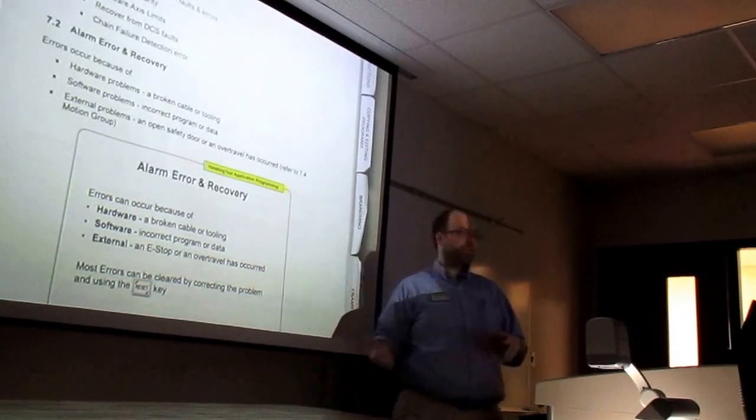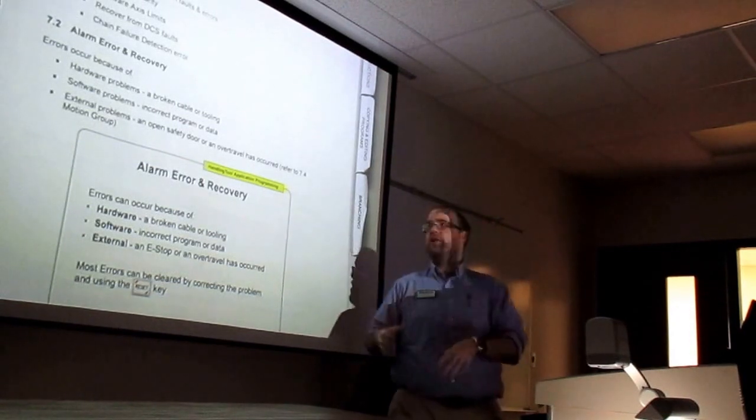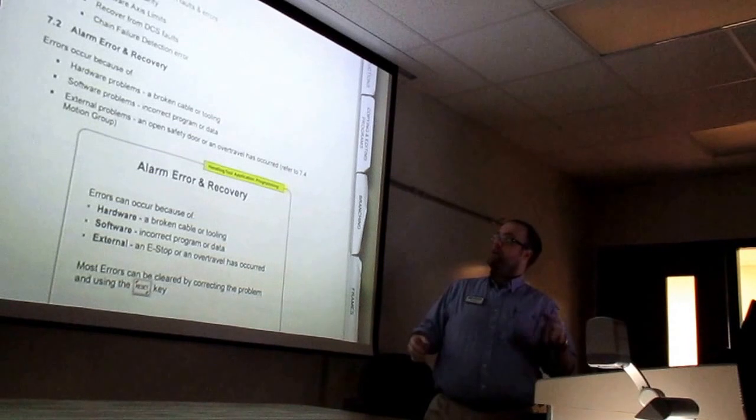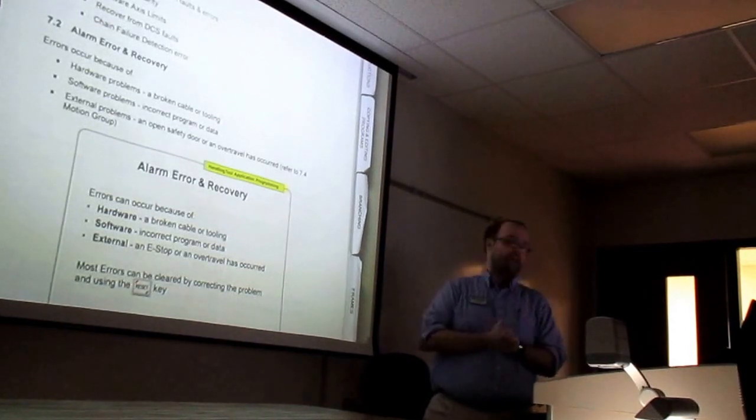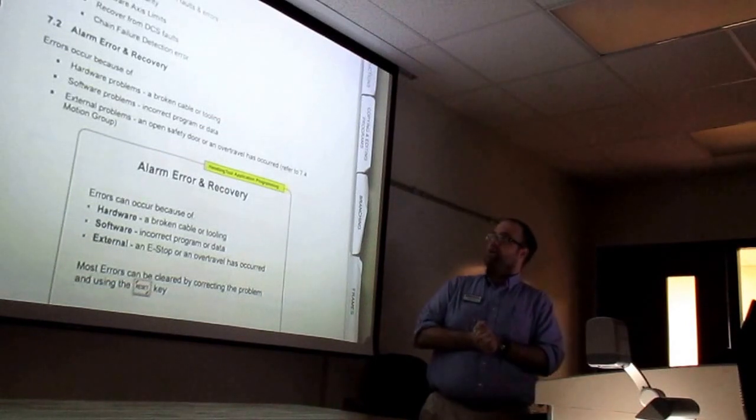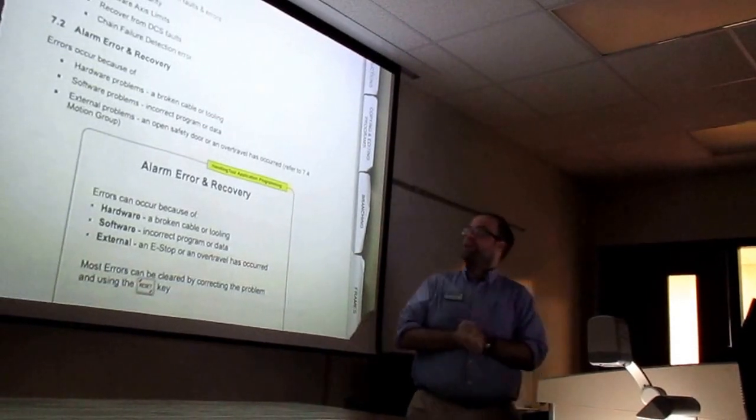Because I don't care who you are there will come a time when your robot will get into a situation of errors. And so these are some of the errors that we're going to talk about how to recover. The singularity issue. I kind of touched on that last week but I want to talk about it more because you might not have encountered it last week. How to recover DCS faults because you guys experienced that in spades last week. As well as what a chain failure detection error is.